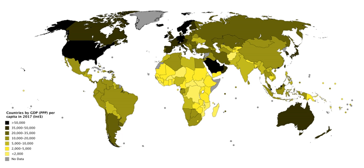The OECD defines GDP as "an aggregate measure of production equal to the sum of the gross values added of all resident and institutional units engaged in production plus any taxes, and minus any subsidies, on products not included in the value of their outputs." An IMF publication states that GDP measures the monetary value of final goods and services — that are bought by the final user — produced in a country in a given period of time, say a quarter or a year.